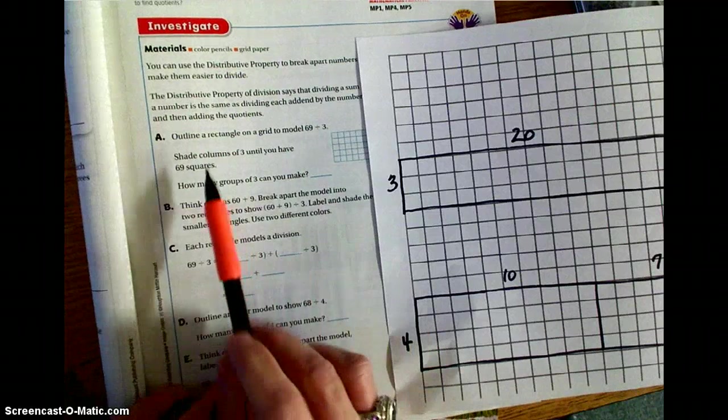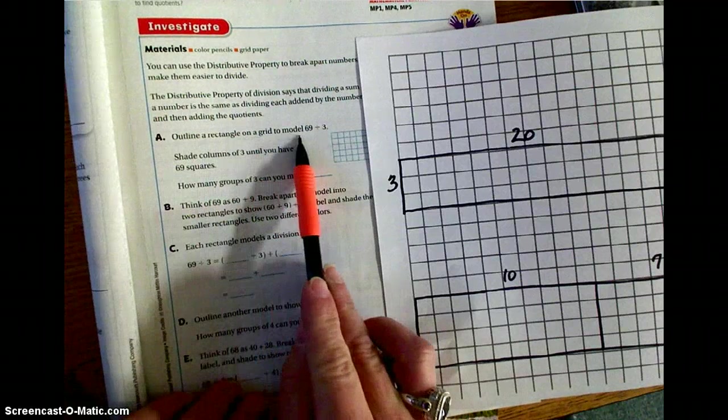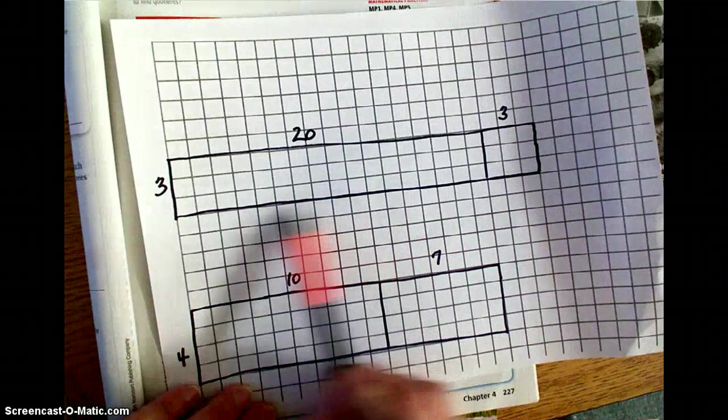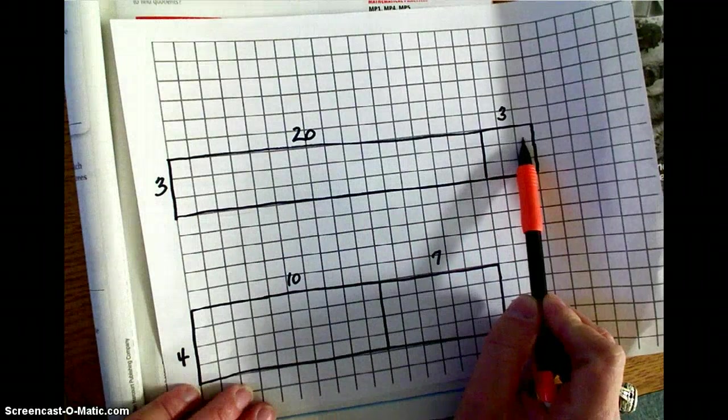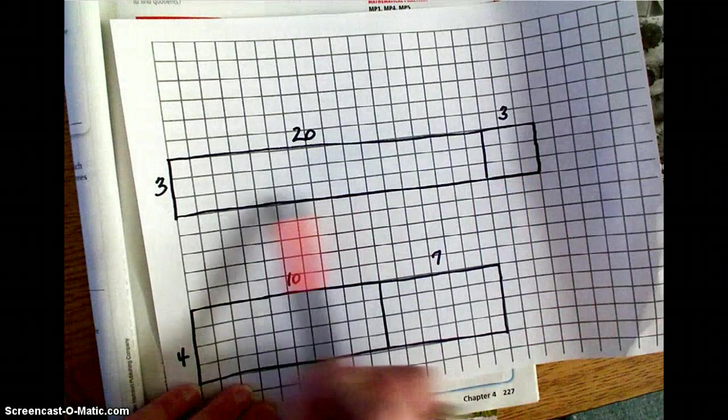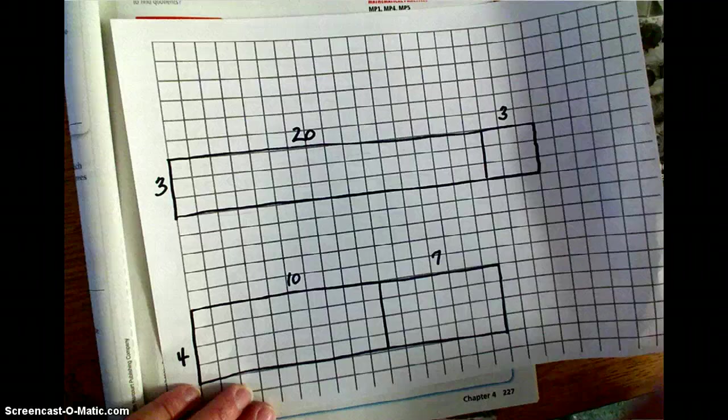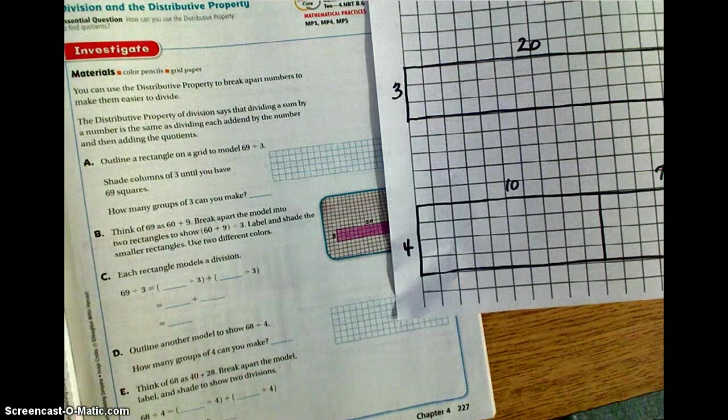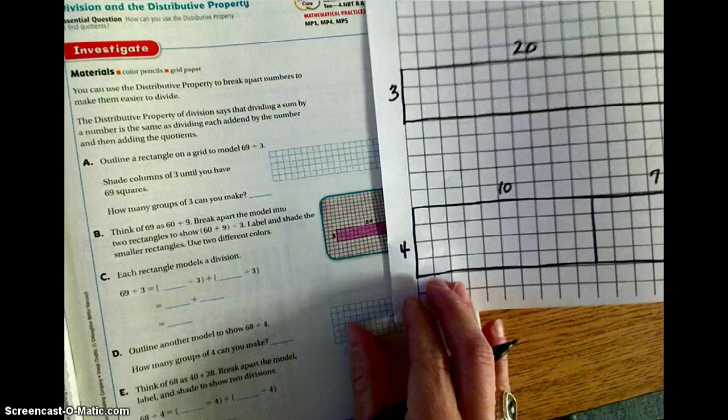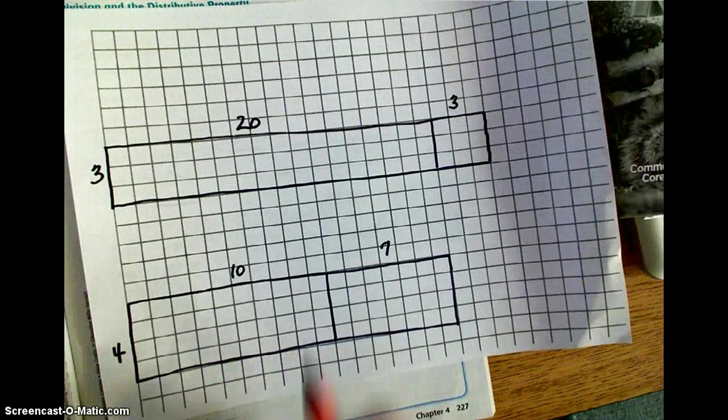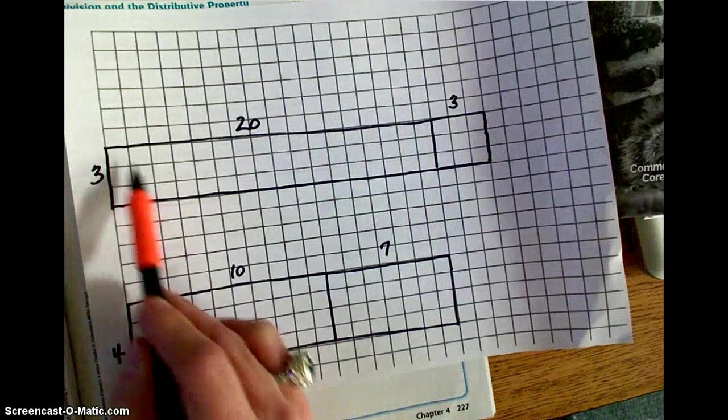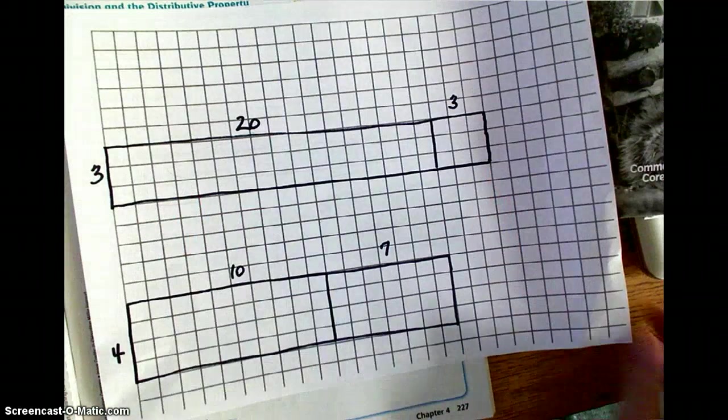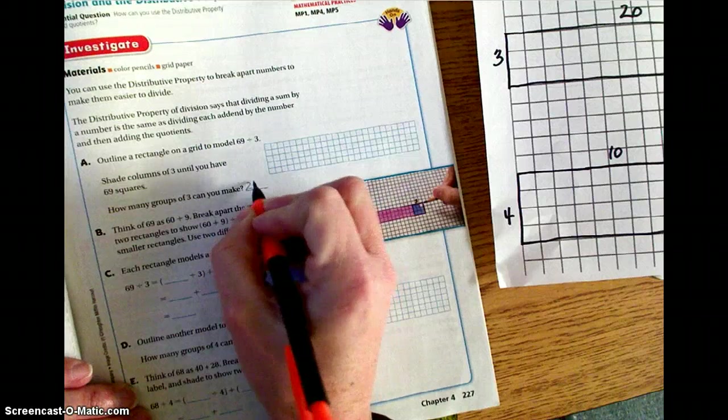Okay, moving on. You are going to outline a rectangle on a grid to model 69 divided by 3. So I have essentially made a very large rectangle that is 3 by 69 total. So I have 69 total squares inside this large rectangle. Now, it wants me to break it up into groups of 3. So, how many total groups of 3 can I make? If I look here, I've already broken that up to 20 and 3. So I have 23 total groups of 3. So if I would count each column, it would take me all the way to 23. So I have 23 groups of 3.